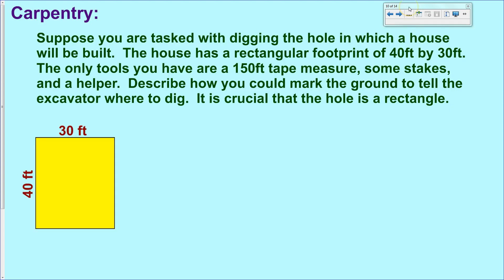Okay, real world situation. Carpentry. Suppose you are tasked with digging a hole in which a house will be built. The house has a rectangular footprint of 40 feet by 30 feet. And the only tools you have available are a 150-foot tape measure, some stakes to drive into the ground to mark locations, and a helper. However, I want you to pause the video and describe how you could mark the ground to tell the excavator where to dig. It is crucial that the hole is a rectangle, so perfectly rectangular, right angles, and you don't want to dig more dirt than is necessary.